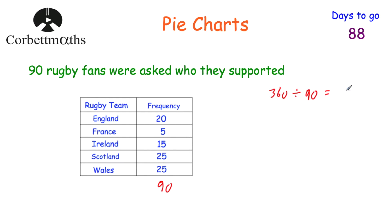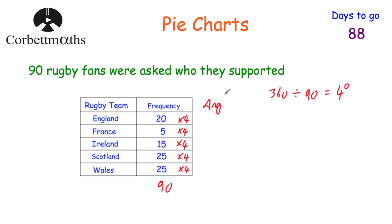So each rugby fan gets 4 degrees. If we multiply each of the frequencies by 4 we can find the angle of each sector in our pie chart. So we're going to multiply each frequency by 4. For example, if we had 20 fans and they get 4 degrees each, altogether that would be 80 degrees. So let's write down an angle column and find the angle for each one of the rugby teams.